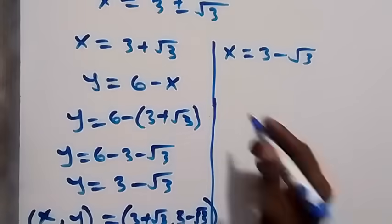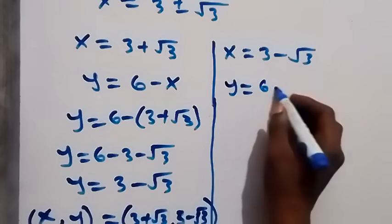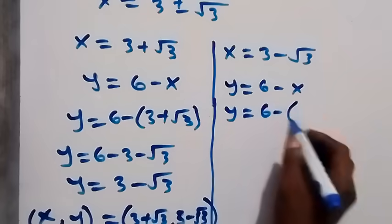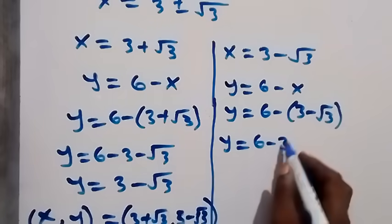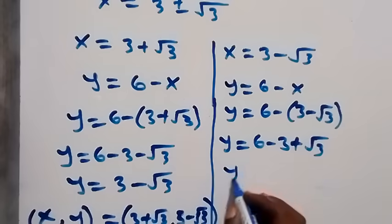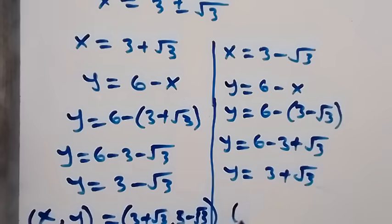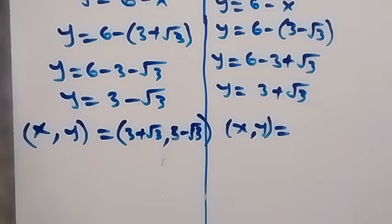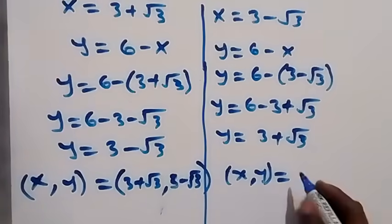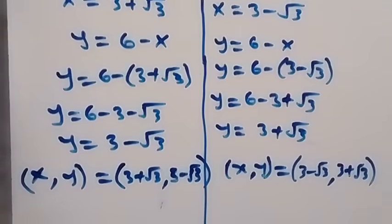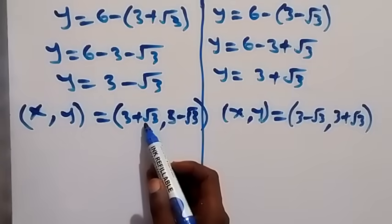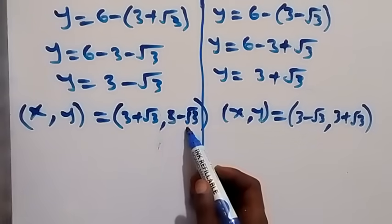For the second case, solving y from y equals six minus x, we have y equals six minus (three minus root three), which gives y equals six minus three plus root three, so y equals three plus root three. The second solution pair is (three minus root three, three plus root three). Notice that the x and y values swap between the two solutions.